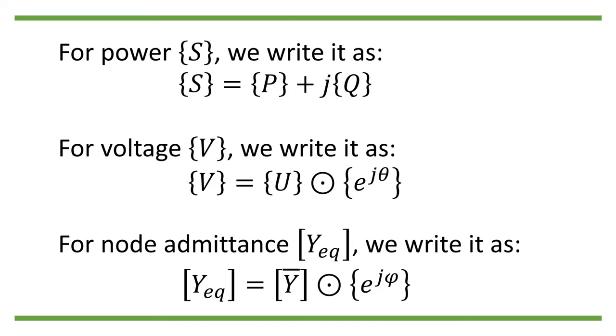People use both forms of coordinates to write the node admittance Y_eq. But in this video, we will stick to the polar coordinate form, so Y_eq equals Y bar entry-wise dot e to the j phi power, where Y bar is the magnitude of node admittance and phi the phase angle of node admittance.